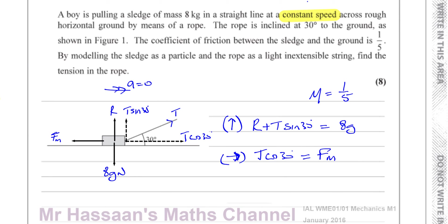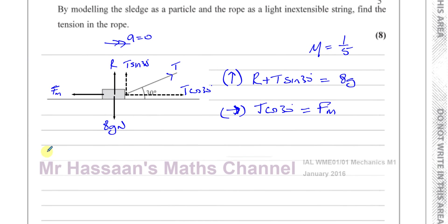So now what we know also is that F_max is μR. The maximum value of friction that can occur in a system is equal to μ, which is the coefficient of friction, times R, which is the reaction force. Now, as this is moving, F_max has occurred. If it wasn't moving and we didn't know that friction had reached its maximum value, then you can't say that it has.